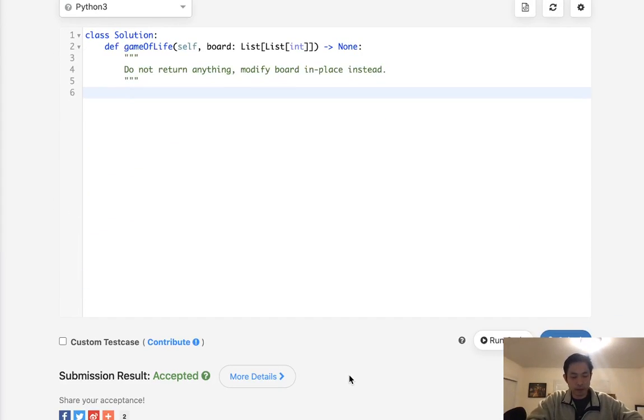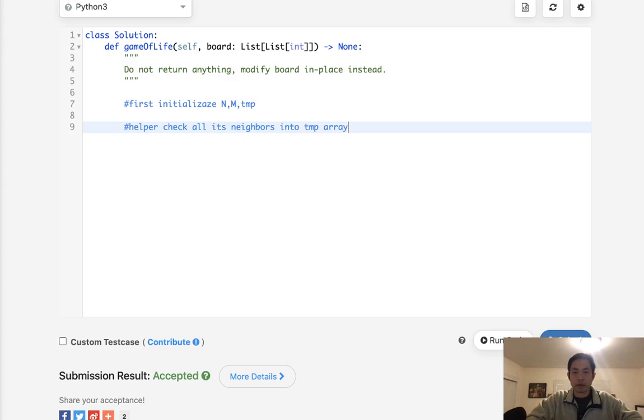And what we'll do is traverse through our grid and simply check its neighbors. If we don't care about memory, we can just create a temporary 2D array and store the next state in that array. After we finish, we could just replace the original board with all the values inside that temporary array. Now there is a monkey wrench here to do it in place without using extra memory, but let's start with trying to solve this without caring about extra memory.